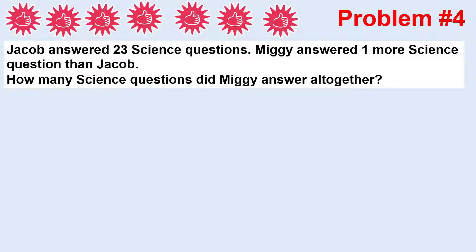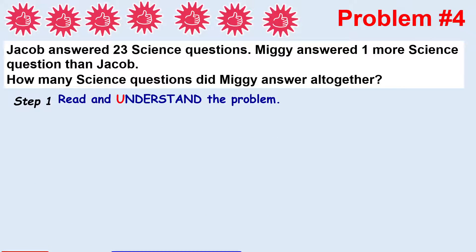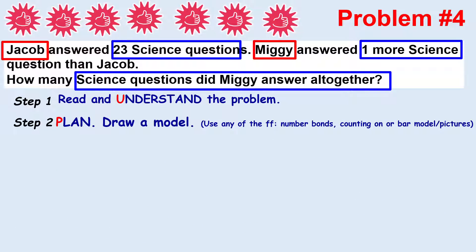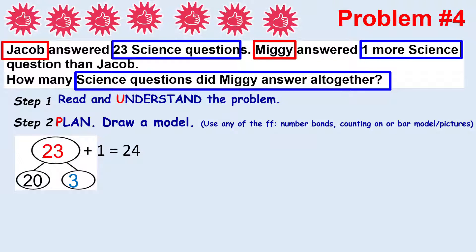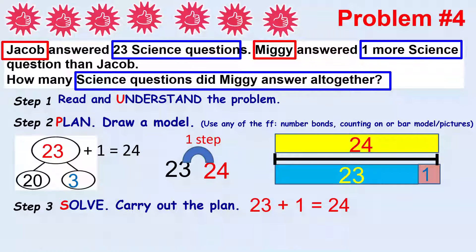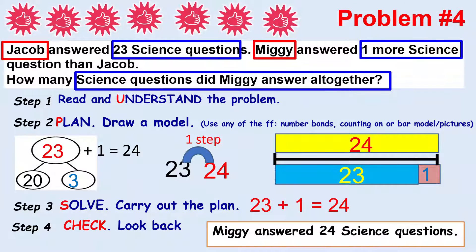Let's have another one. Jacob answered 23 science questions. Miggy answered one more science question than Jacob. How many science questions did Miggy answer altogether? Understand the problem — box important details. Then plan — draw a model using number bonds: 23 makes 20 and 3, then add 1, so it's 24. That's counting on one more step. Use bar models too. Then solve — write your addition sentence: 23 plus 1 equals 24. Check — yes, Miggy answered 24 science questions.